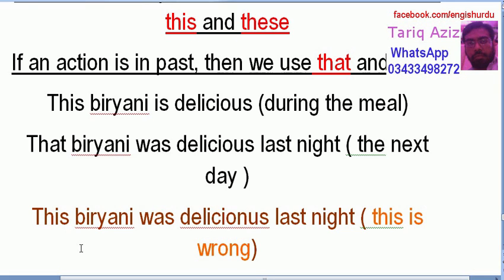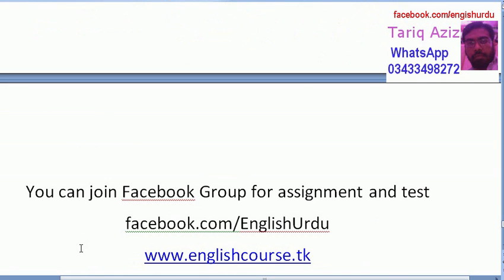Past action کے لیے you cannot use this and these — بلکہ that یا those کا استعمال کریں گے۔ ایک سے زیادہ ہو تو those، ایک ہو تو that — لیکن ماضی کے لیے۔ حال یا مستقبل کے لیے ایک ہو تو this، ایک سے زیادہ ہو تو these لگائیں گے۔ 'These biryanis are delicious.'